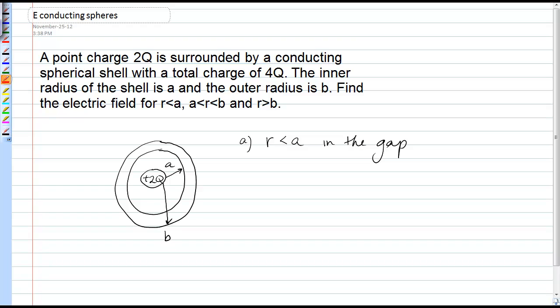We draw our Gaussian surface in the gap. Let the radius of the Gaussian surface be r, and q_in then is simply the point charge, because that's the only charge inside that Gaussian surface, and that would be 2Q. So, applying Gauss' Law...